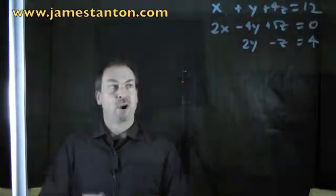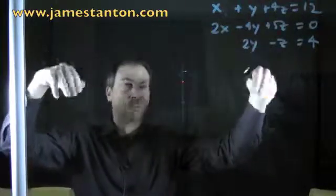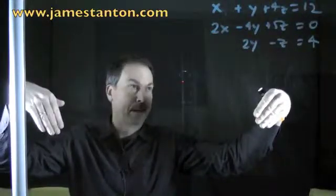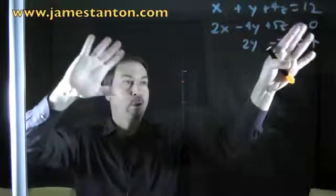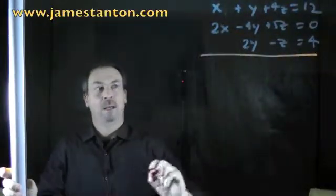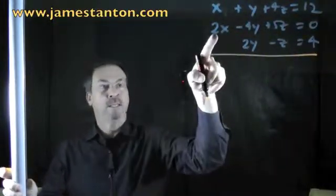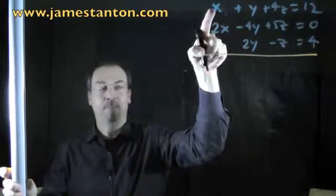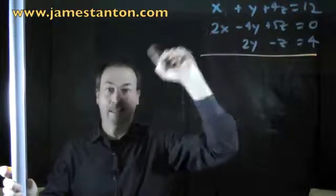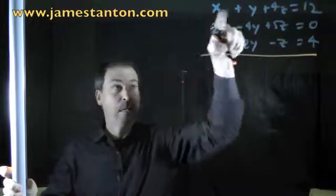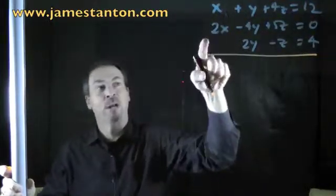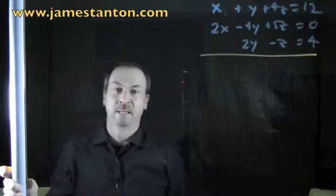So let's go through the process of trying to manipulate these equations using what we believe about balanced equations and equality, and see if we can make this much, much simpler. For example, my brain sees a 2x here and sees an x there. It would be nice if I could make that middle equation simpler — get rid of the x's. So I could subtract the first and second equation — take this equation minus double that equation.